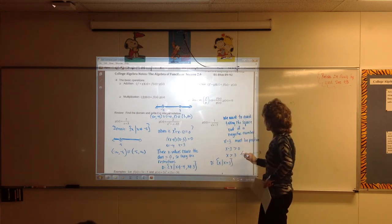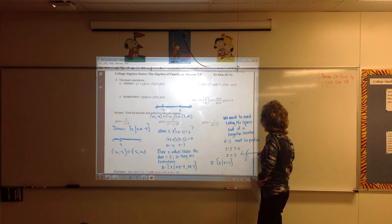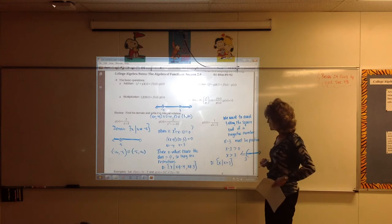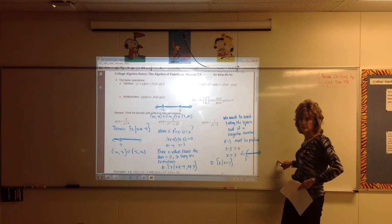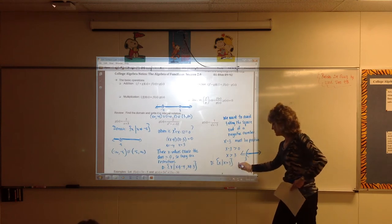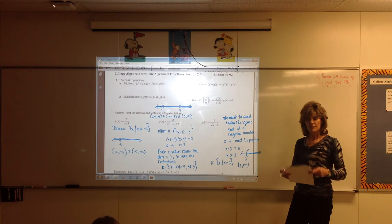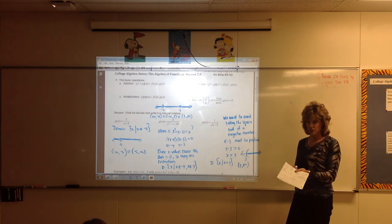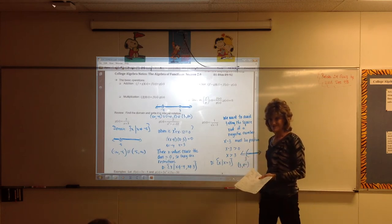If you draw a picture of that, start at 3, don't include 3 — we use an open circle — but do include everything bigger. In interval notation from left to right: start at 3, don't include 3, and go all the way to infinity. The first few problems on your homework ask you to find the domain; this part is review for you.